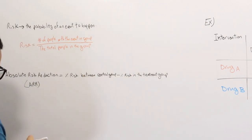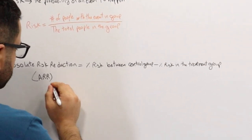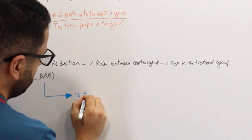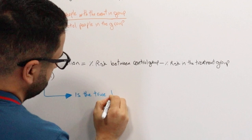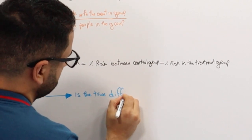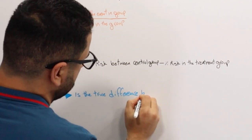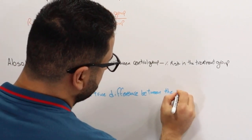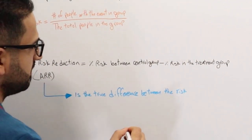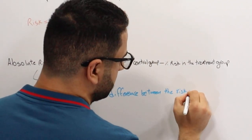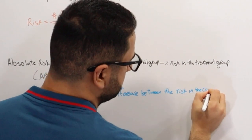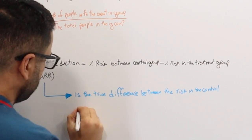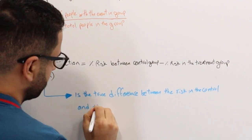In other words, absolute risk reduction is the true difference between the risk in the control group and the treatment group.